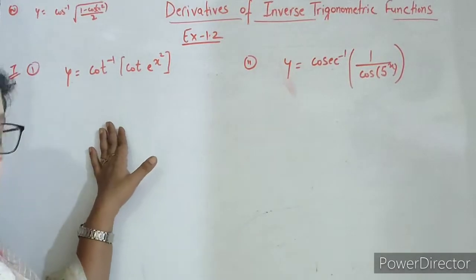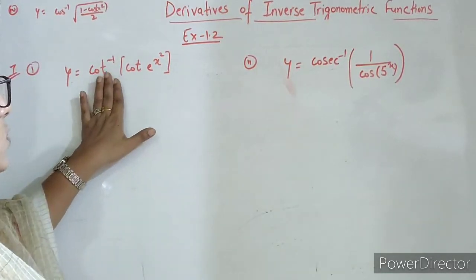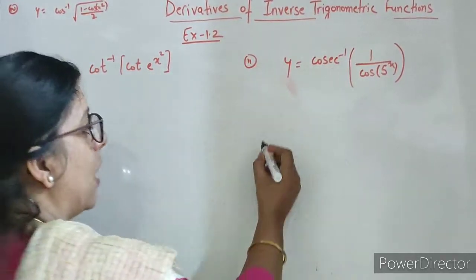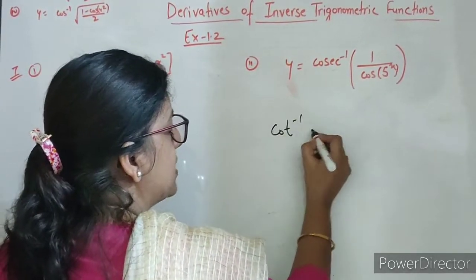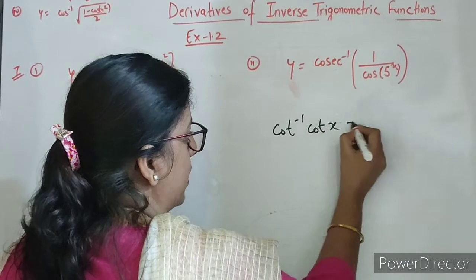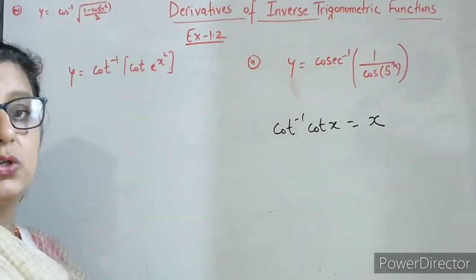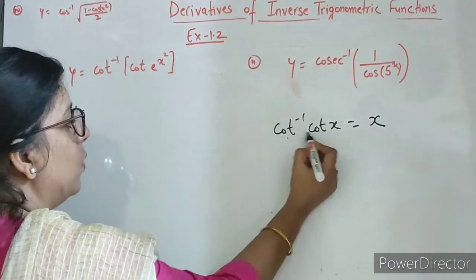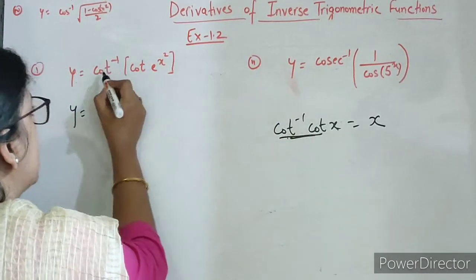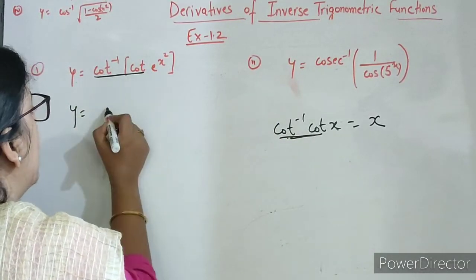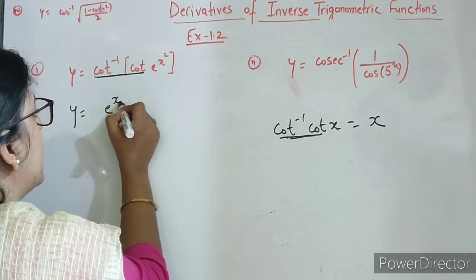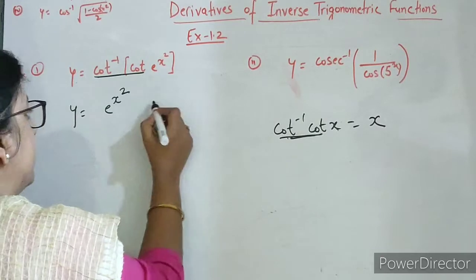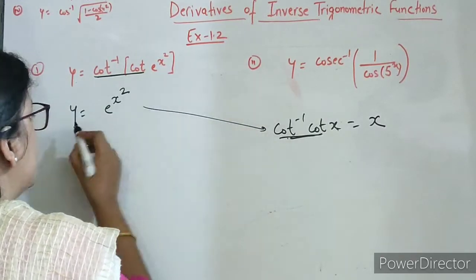So start karte with our first part, that is y equals to cot inverse of cot e to the power x square. Now as you know, cot inverse cot x equals to x. So cot inverse cot of e to the power x square means e to the power x square. You can write here this property.